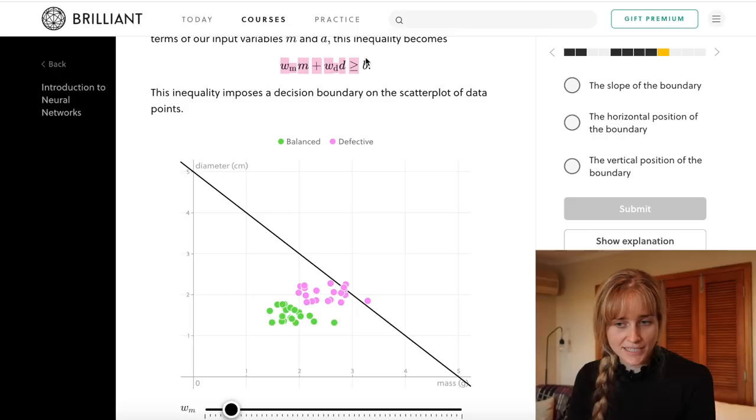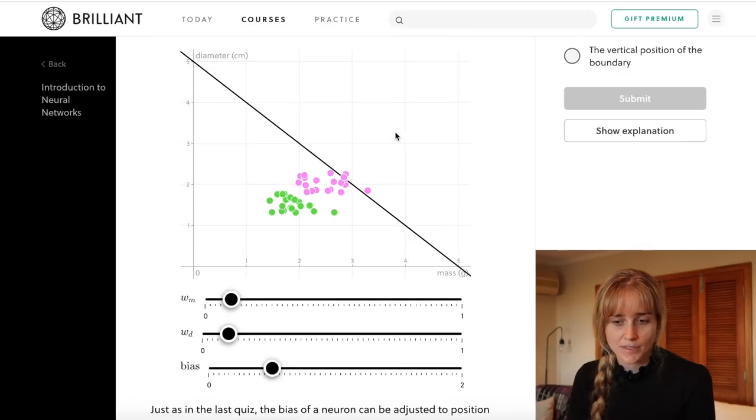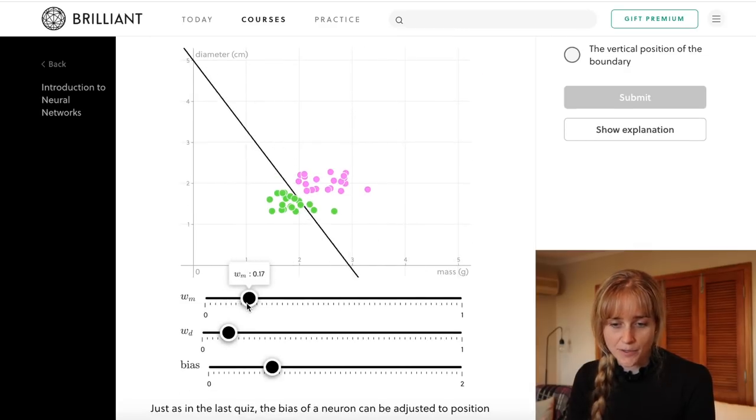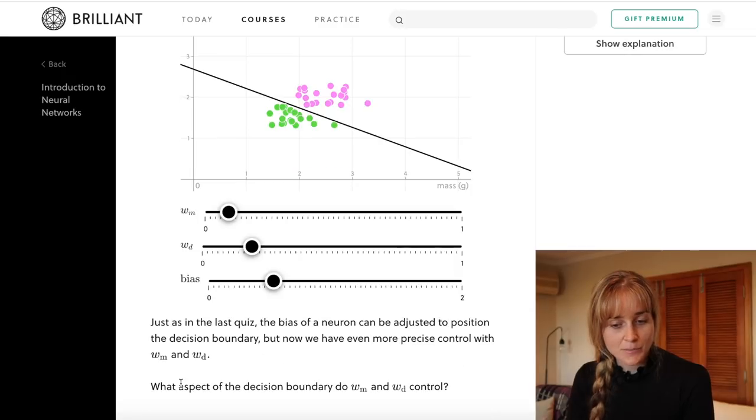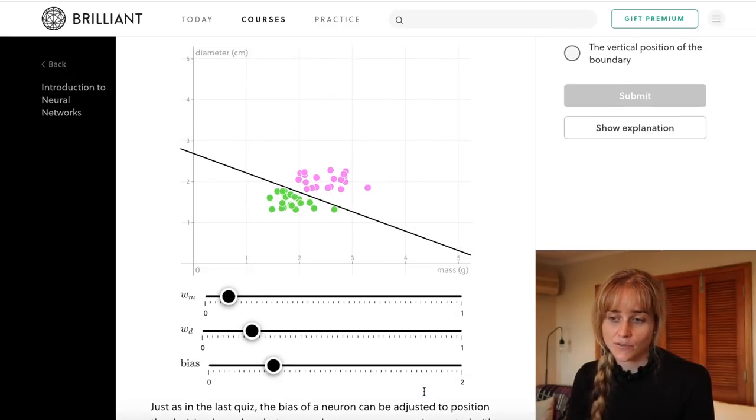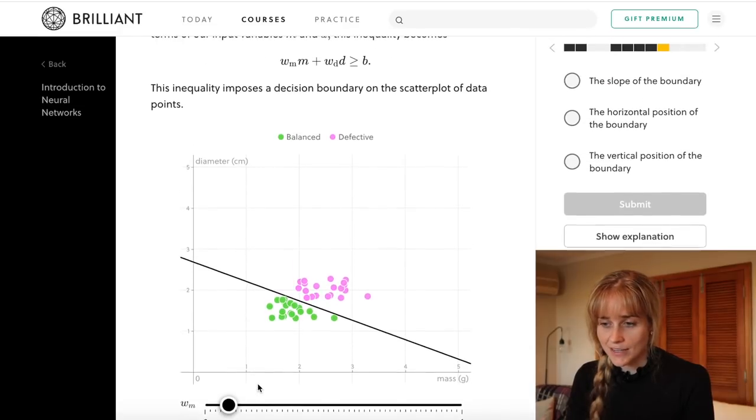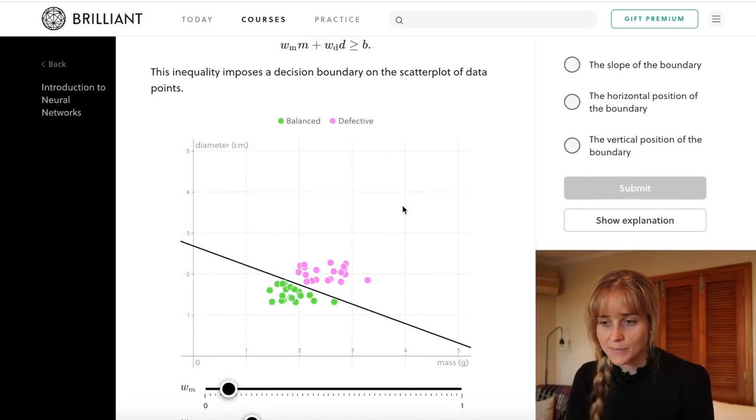That inequality that we just came up with imposes a decision boundary on the scatter plot of data, so we can adjust the value of wm and wd as well as our bias to adjust this line accordingly. It asks what aspect of the decision boundary do wm and wd control? Well just from fiddling around with that, they seem to be influencing the slope of the boundary.